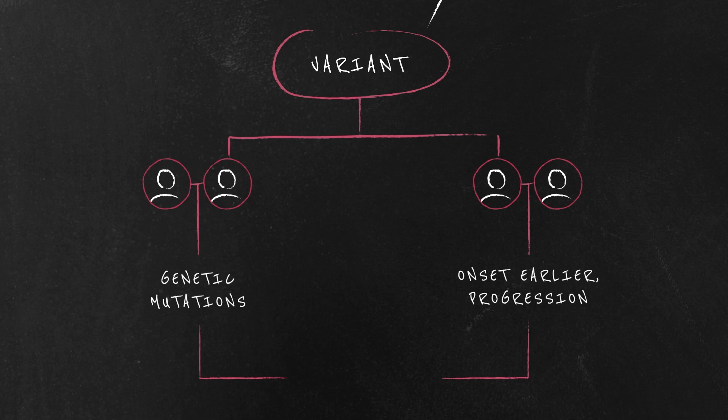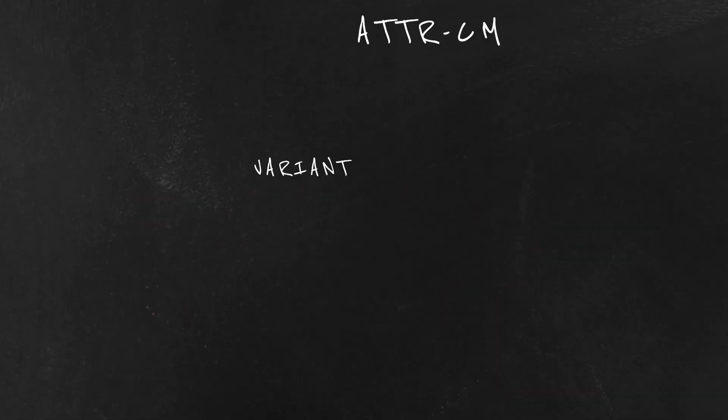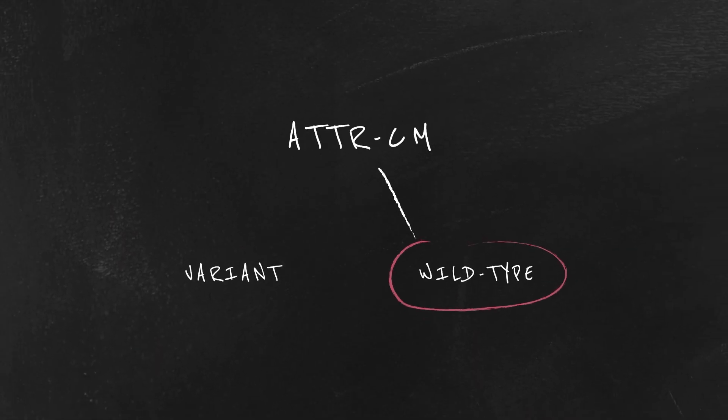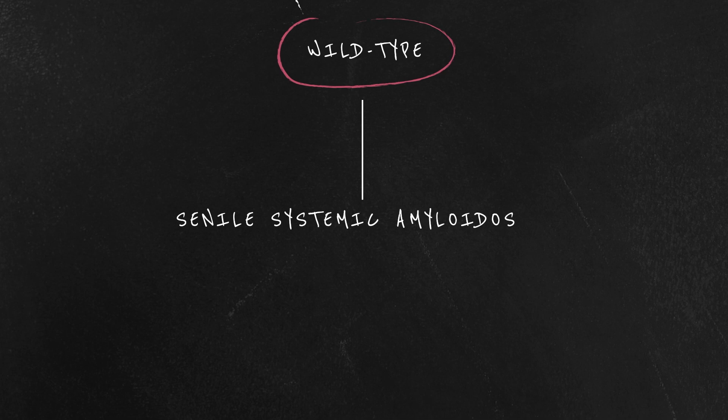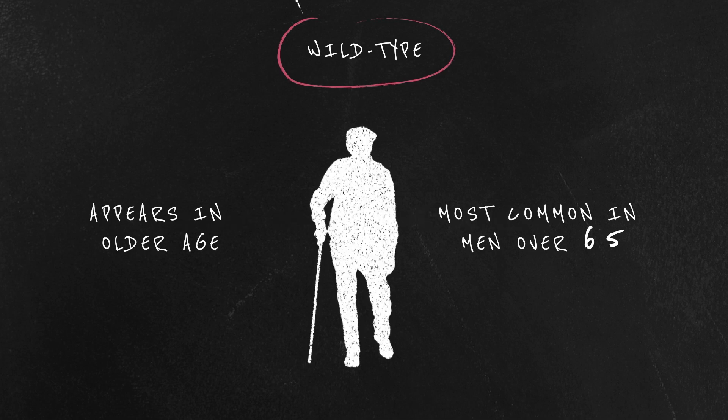It can start earlier and progress faster and has a median survival rate of 2.5 years if left untreated. The second is wild type, formerly known as senile systemic amyloidosis, which often appears and progresses in older age.